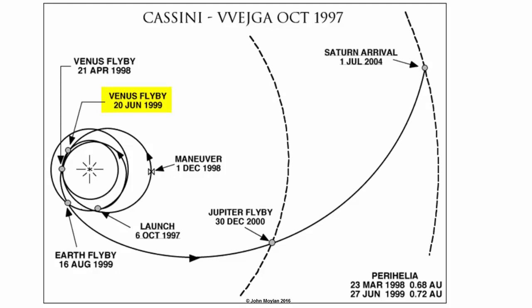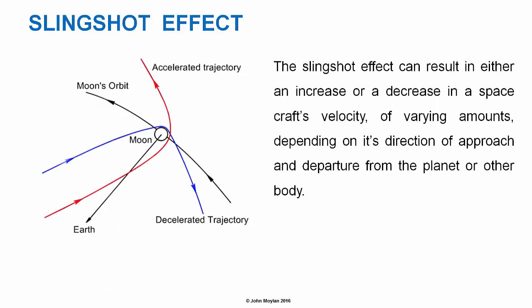It then flew back in for a second flyby of Venus on the 20th of June 1999, completed an Earth flyby on the 16th of August 1999, gained a gravity assist from Jupiter on the 30th of December 2000, and finally arrived at Saturn on the 1st of July 2004.